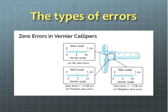If the 0 of the vernier scale is shifted to the right of 0 on the main scale, then it is positive zero error. If the 0 of the vernier scale is shifted to the left of the main scale, then it is negative zero error.